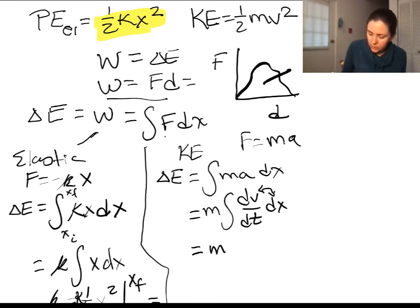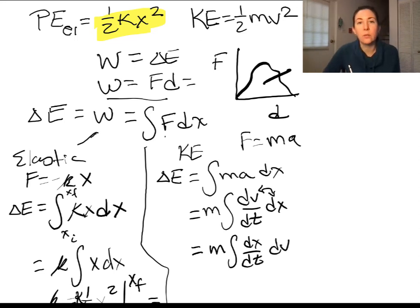When we do that, we get dx/dt integrated over the velocity, but dx/dt is just the velocity. And so now we're looking and seeing this similar equation where we have mass times the integral of the velocity.